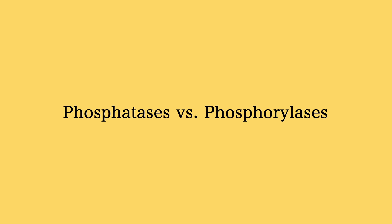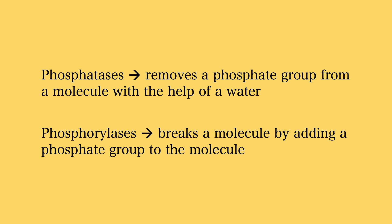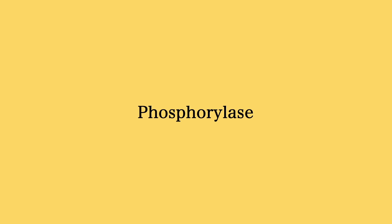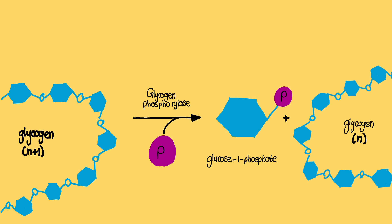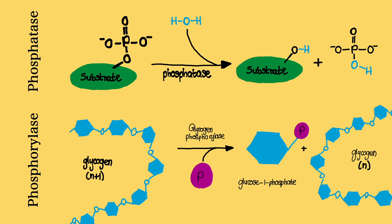Make sure that you do not confuse a phosphatase enzyme with a phosphorylase enzyme. Phosphatase enzymes remove a phosphate group with the help of a water molecule, while phosphorylase adds a phosphate group from an inorganic phosphate to any acceptor molecule — the latter is more of a substitution reaction. A great example of a phosphorylase enzyme is glycogen phosphorylase, which is the enzyme involved in glycogenolysis — the breakdown of glycogen to create glucose molecules for our energy needs. Comparing the mechanisms side by side will help you better understand each and avoid confusion.